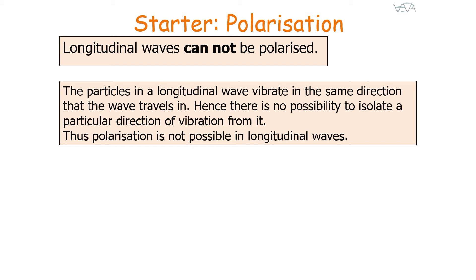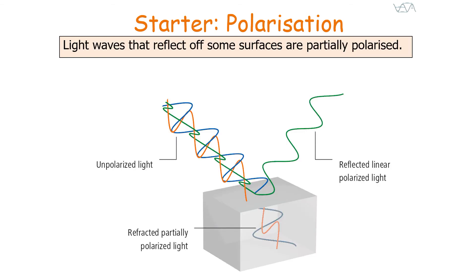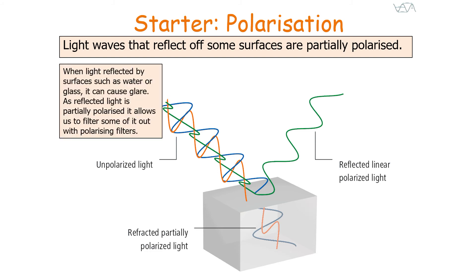Therefore, polarisation is not possible in longitudinal waves. If a wave can be polarised, it is proof that it must be a transverse wave, and all electromagnetic waves are transverse waves. Light waves can reflect off some surfaces and be partially polarised — when light is reflected by surfaces such as water or glass, it can cause glare.